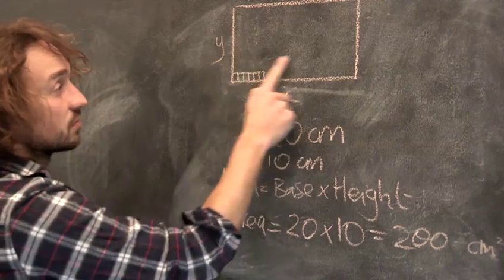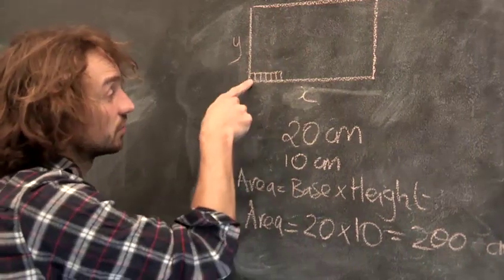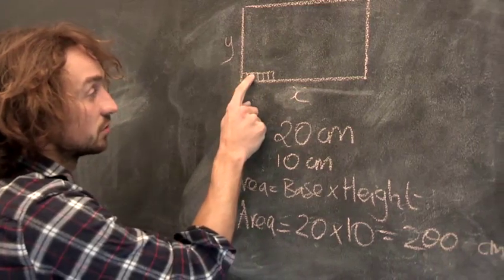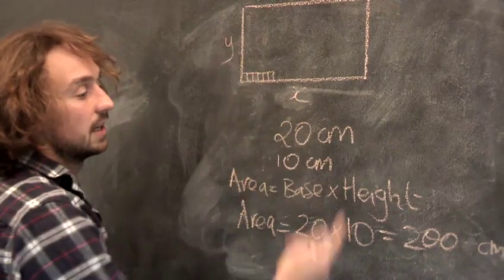That means that in this rectangle here, there's 200 of these little squares, each one centimetre squared. So 200 of these little squares within here, and that's what that means.